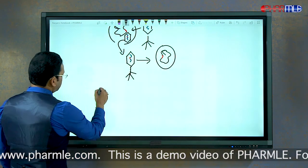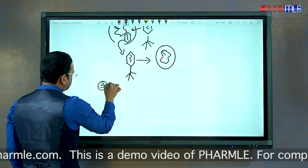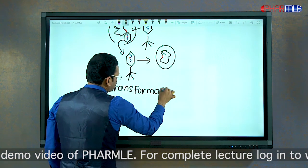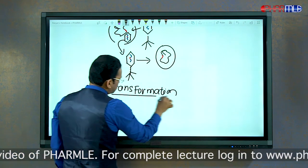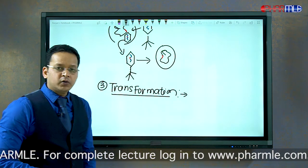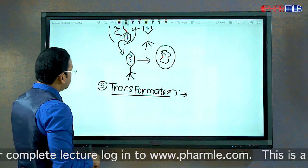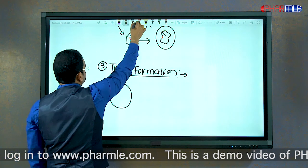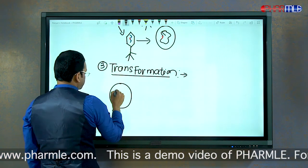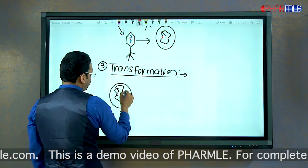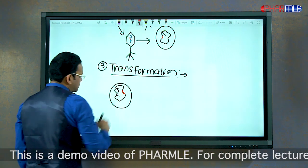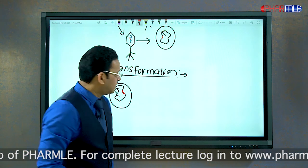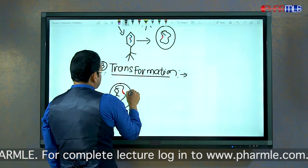The third mechanism is the simplest one and it is called transformation. In transformation, suppose this bacterium has a gene for resistance in its DNA. Now because of an antibiotic or some other insult, this bacterium dies and undergoes lysis.